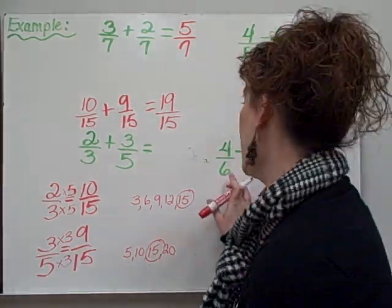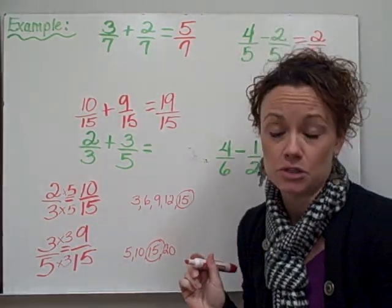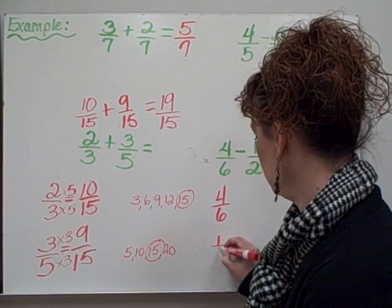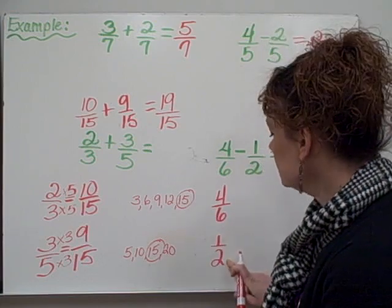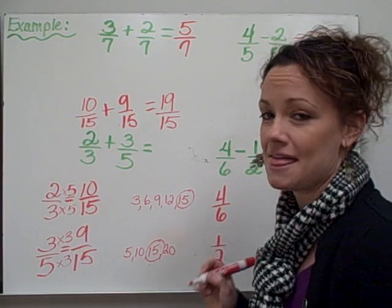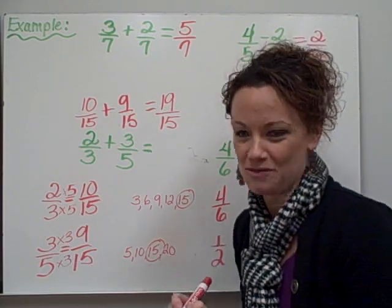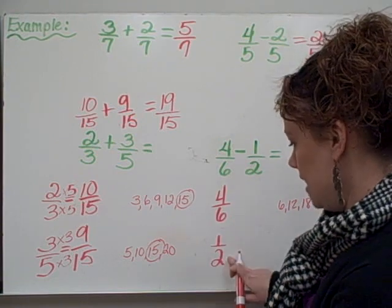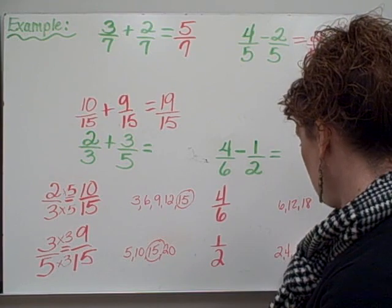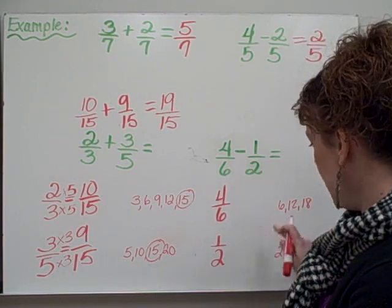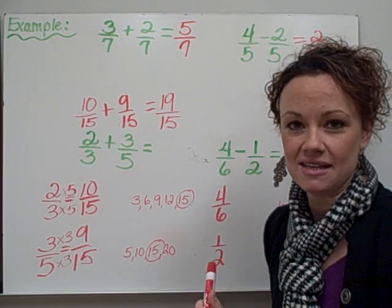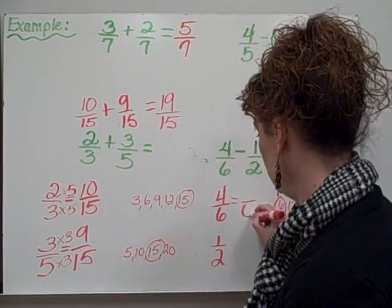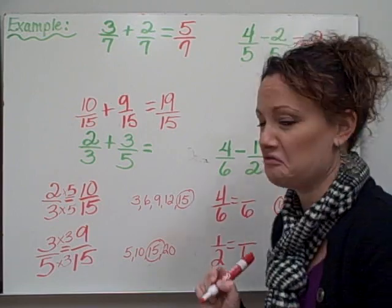Let's try a problem with subtraction. Again, my denominators are different, so it's my job to create equivalent fractions to make them the same. I rewrite the fractions and begin to list the times tables of the denominators. So we have 6, 12, 18 for the 6 times table, and 2, 4, 6, 8 for the 2 times table. As we search for like numbers, the first one they have in common is 6, so 6 is going to become our new denominator for our equivalent fractions.